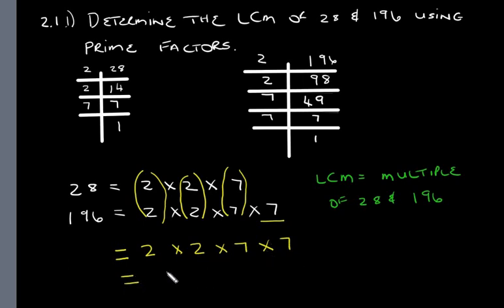So we include that as well. So the lowest common multiple will be 2 times 2 times 7 times 7, which is 196. And therefore your LCM is 196. Let's answer the next question.